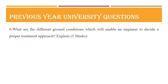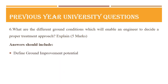The sixth question is: what are the different ground conditions which will enable an engineer to decide a proper treatment approach? Explain, also asked for only five marks. Your answer should include the definition for ground improvement potential and a brief explanation of the three different ground conditions: hazardous ground condition, poor ground condition, and favorable ground condition.